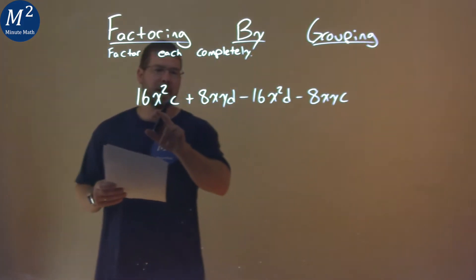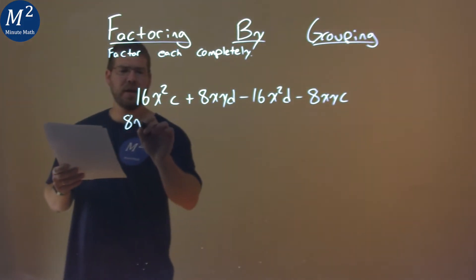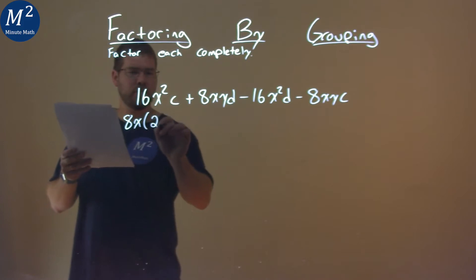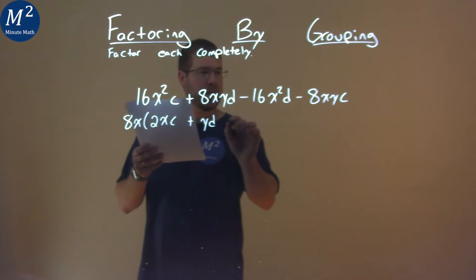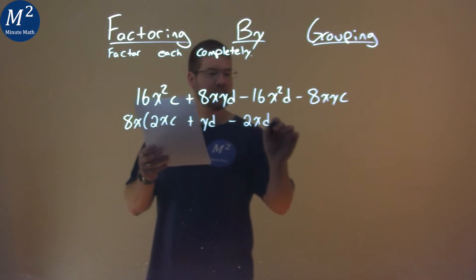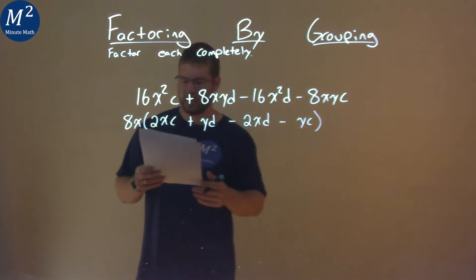One thing I notice is that 8x is in all parts here, so I'm going to pull that out. Pulling out an 8x here, I'm left with 2xc + yd - 2xd, and then minus yc. Okay.